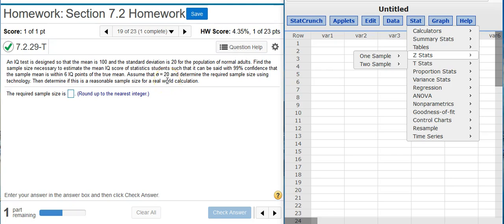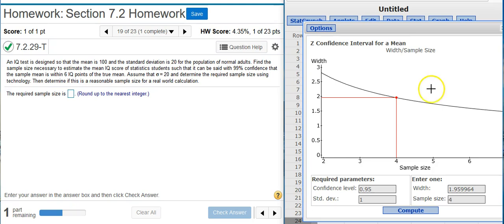That is the population standard deviation, and so we're going to use Z-stats. We have only one sample, and then I want to click down here on width sample size because we're using the width of a confidence interval to calculate sample size.